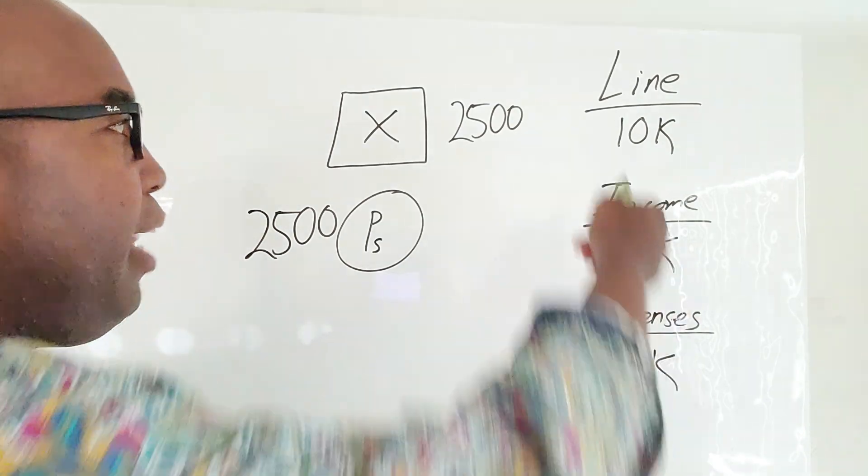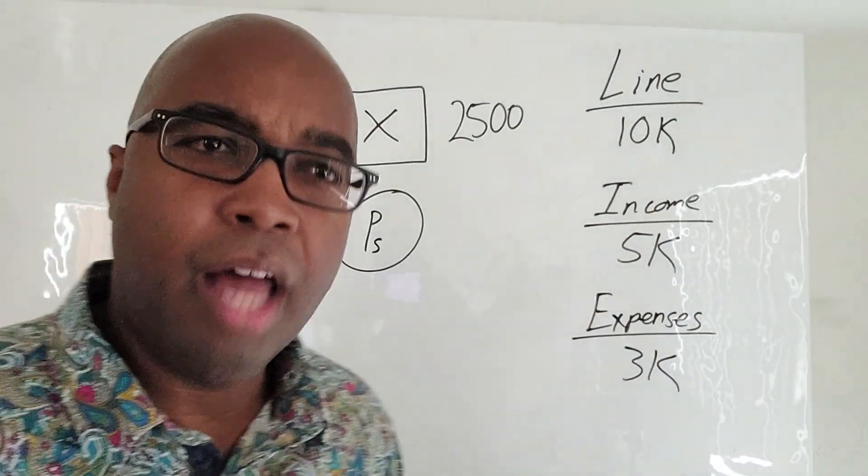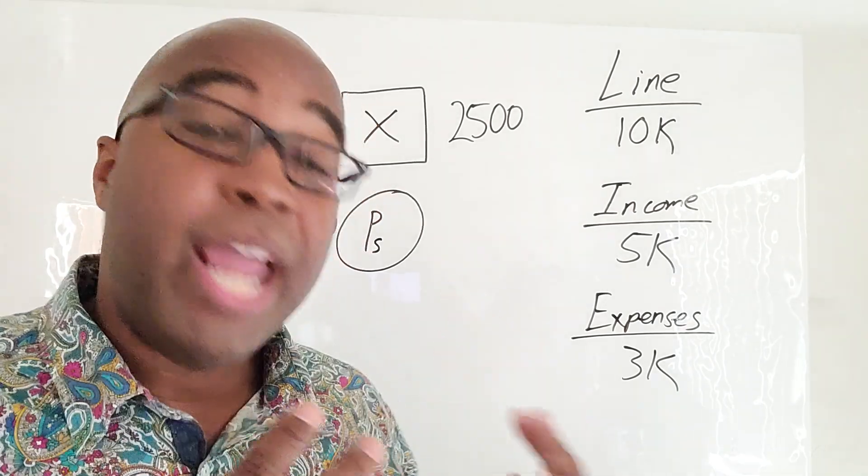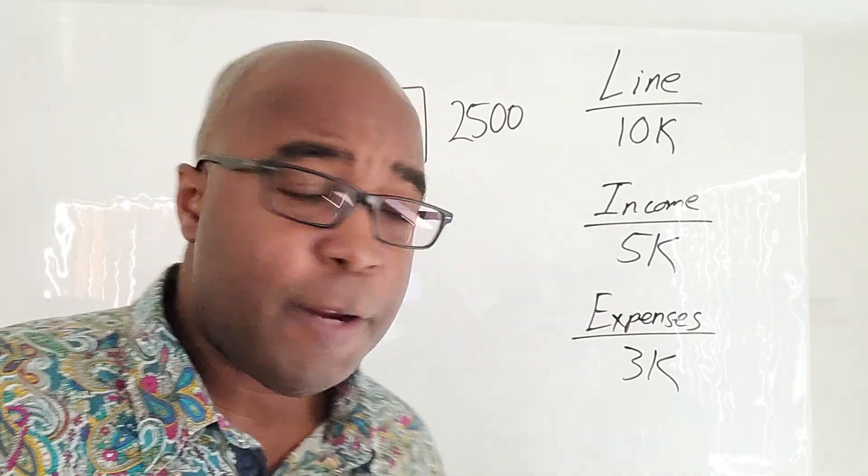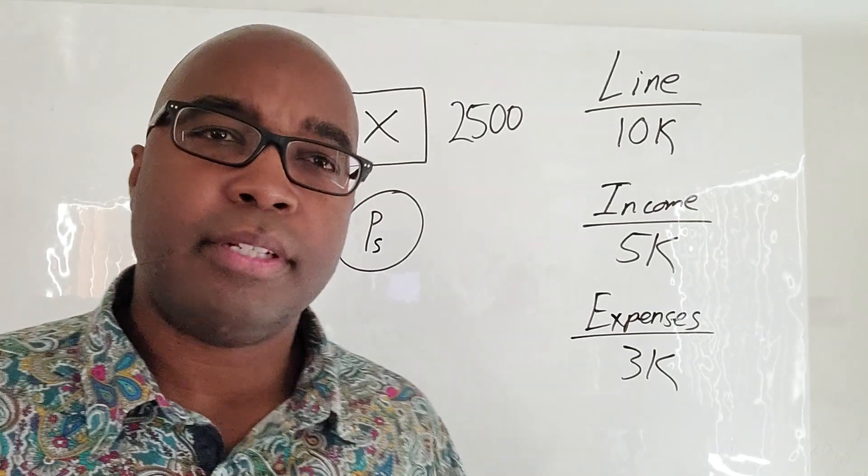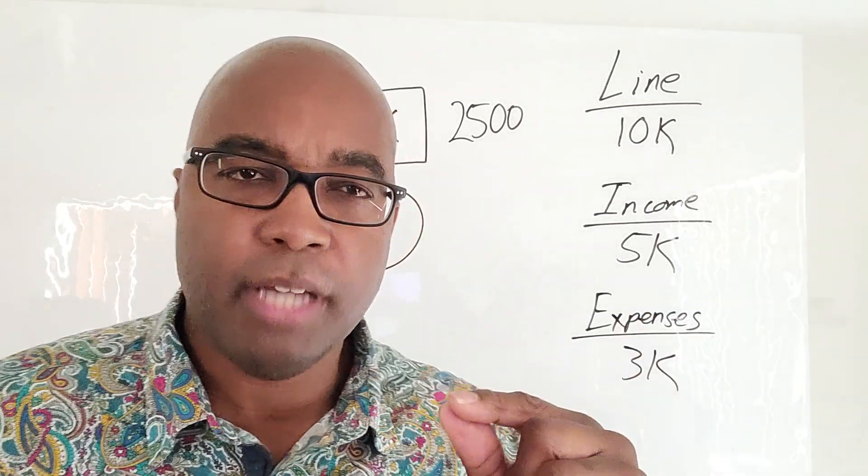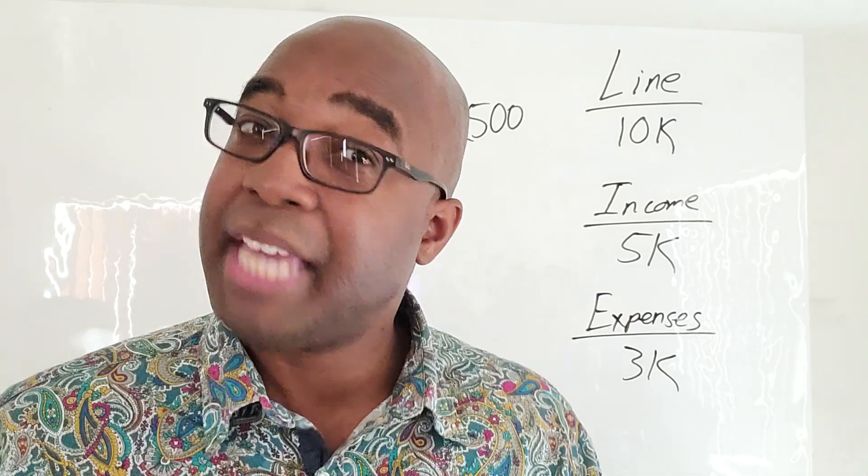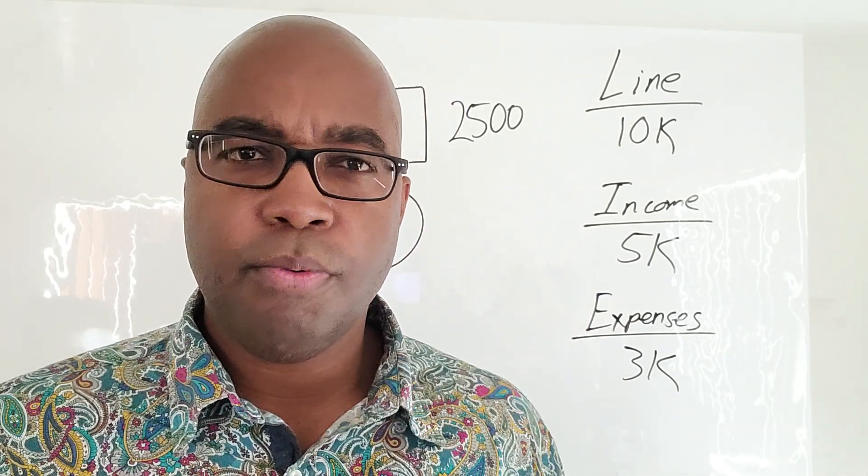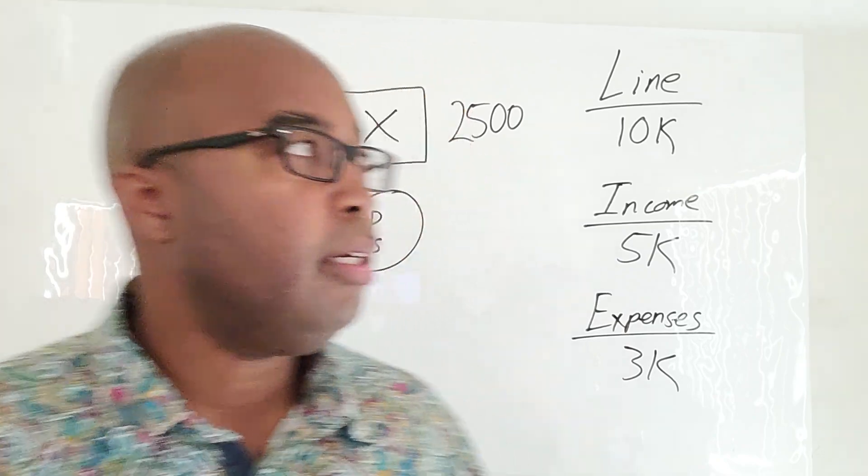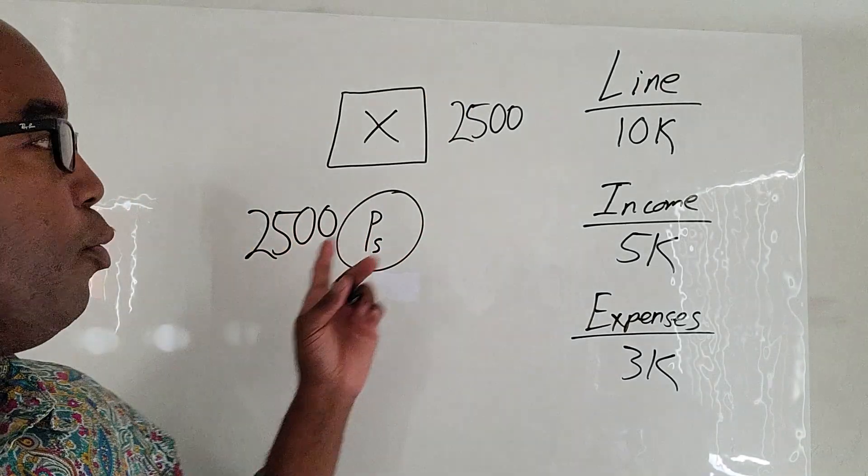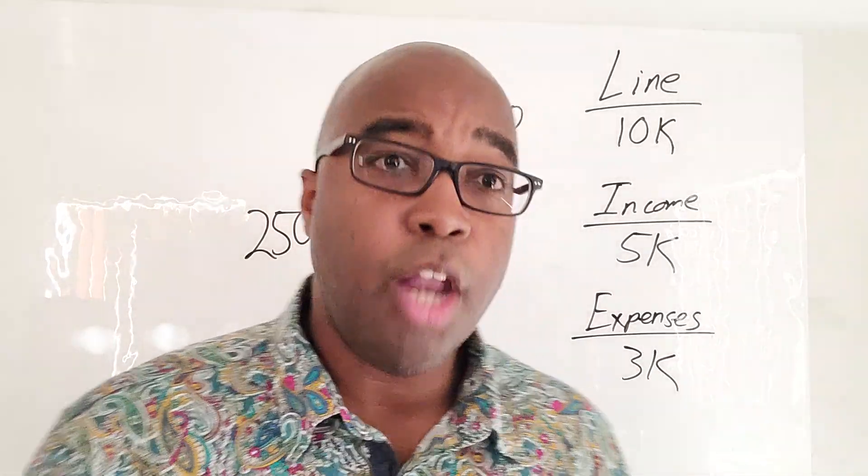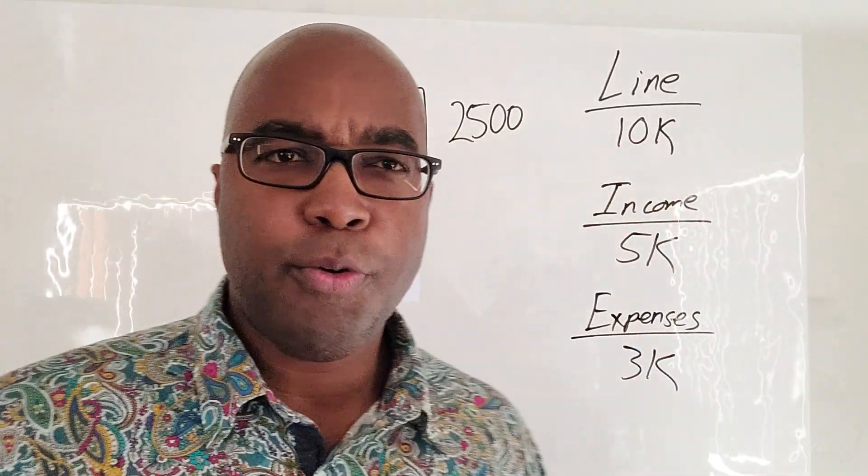Let's go ahead and say you've got a line of credit of $10,000. You got an income of $5,000 each month and regularly, on average, you got expenses of $3,000. That's going to leave $2,000, five minus three, $2,000 of cashflow for you.